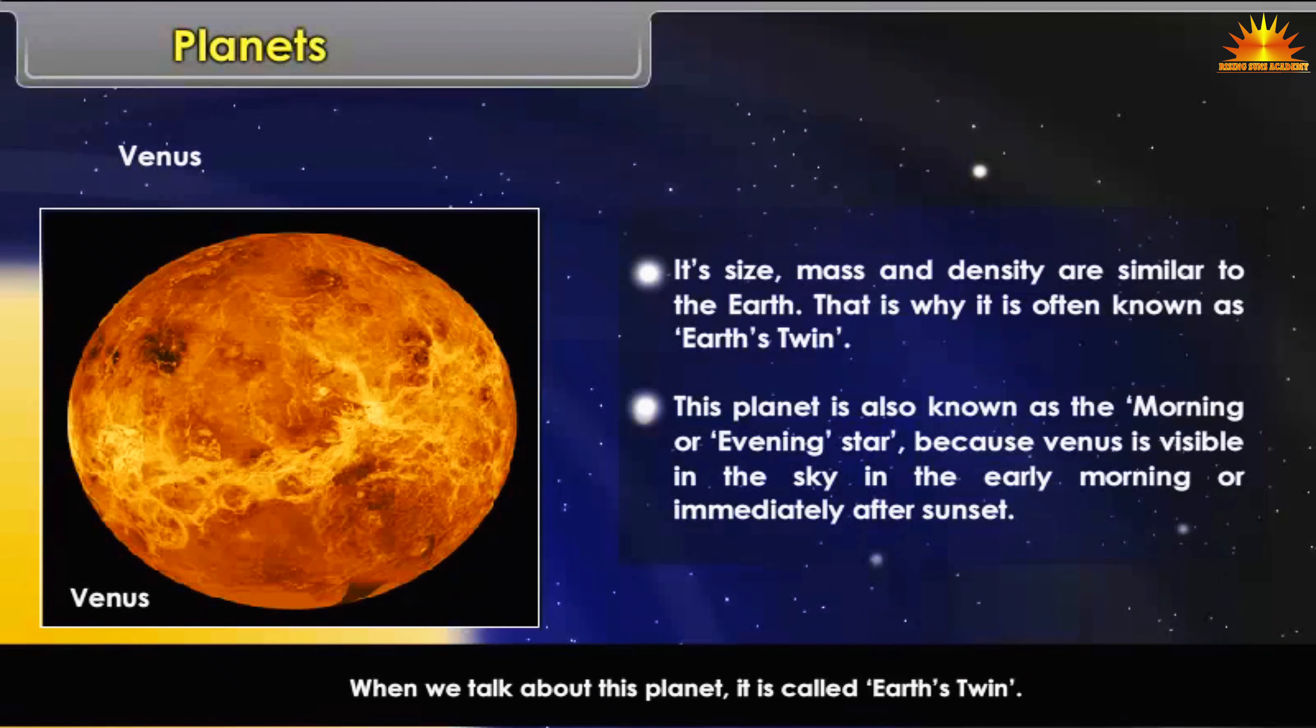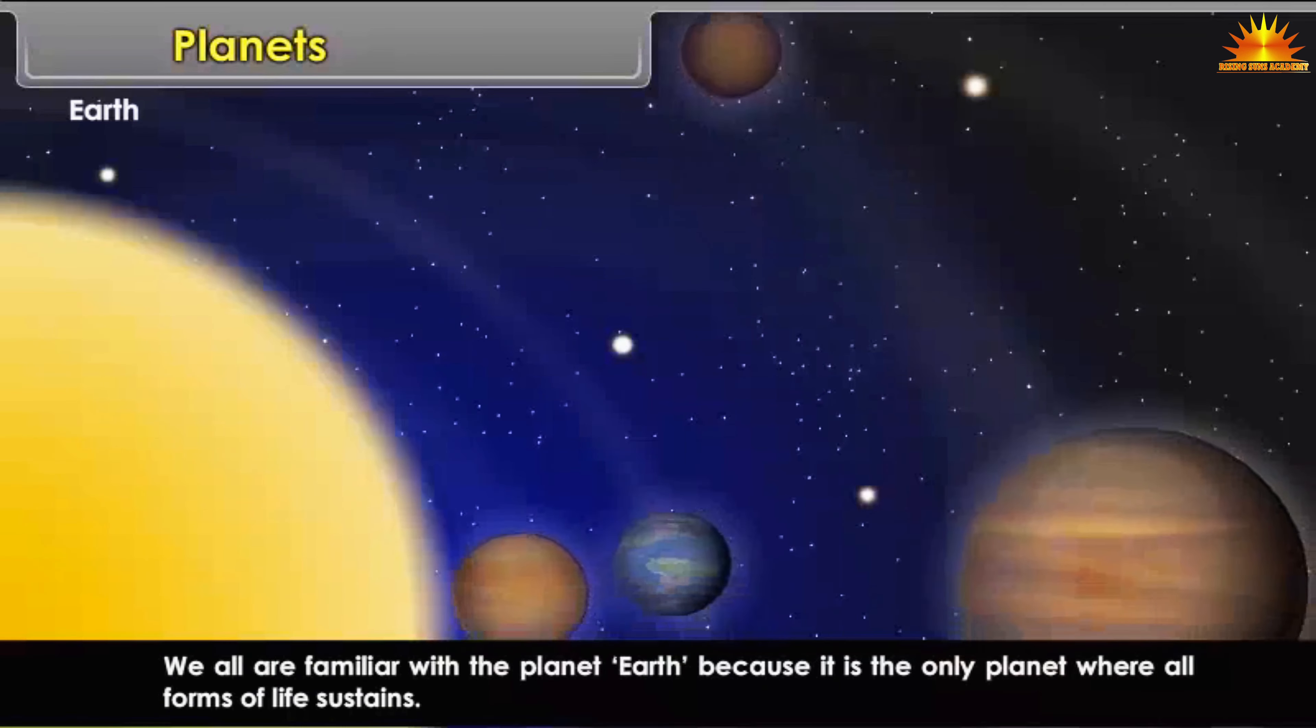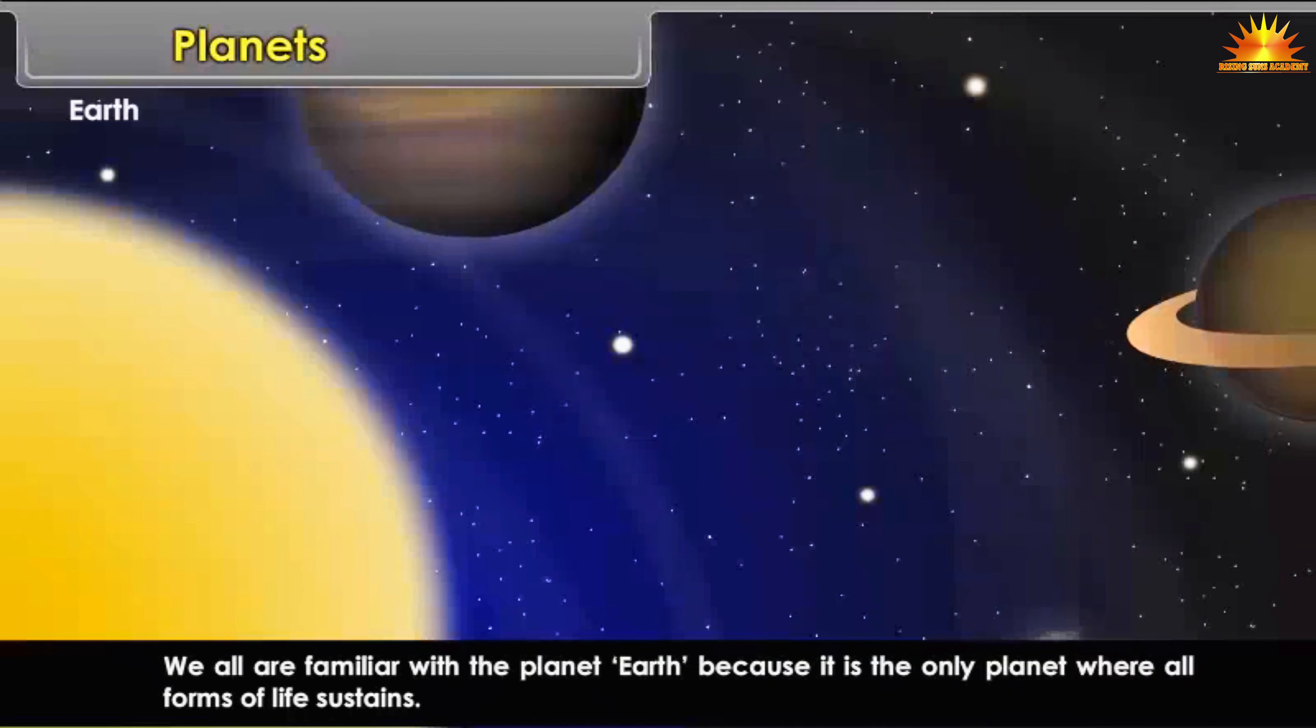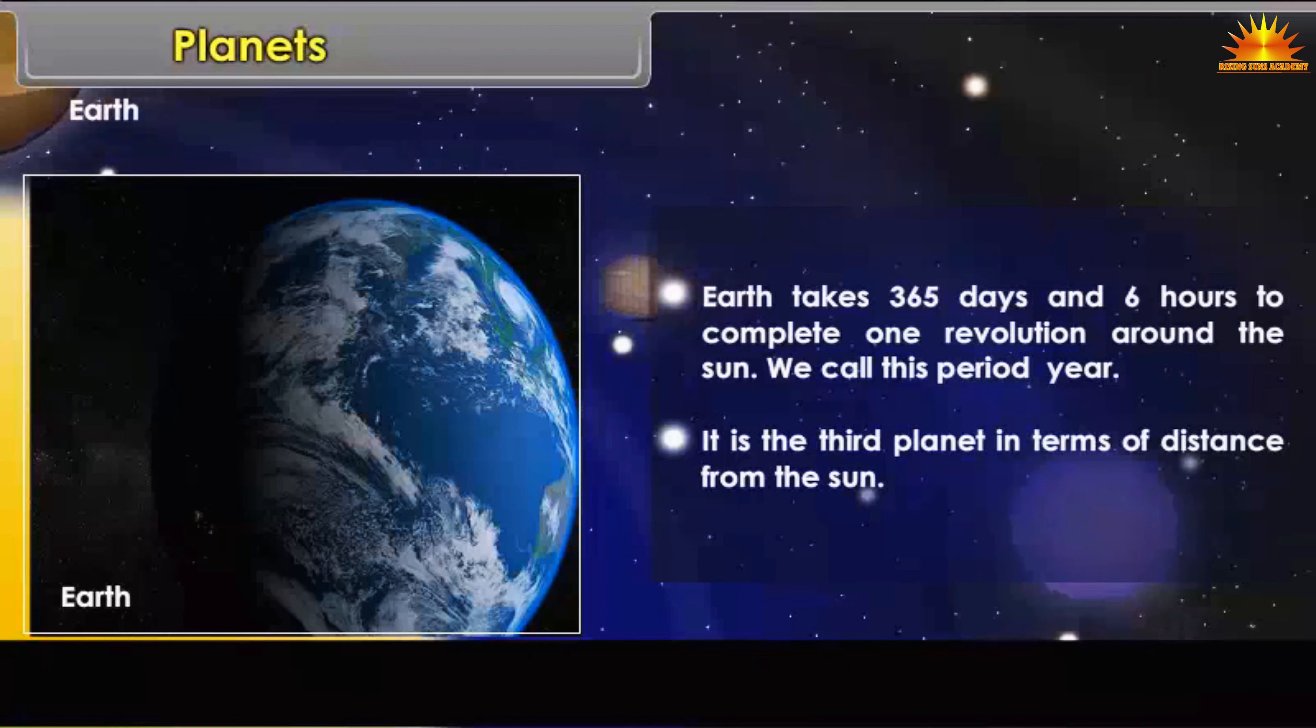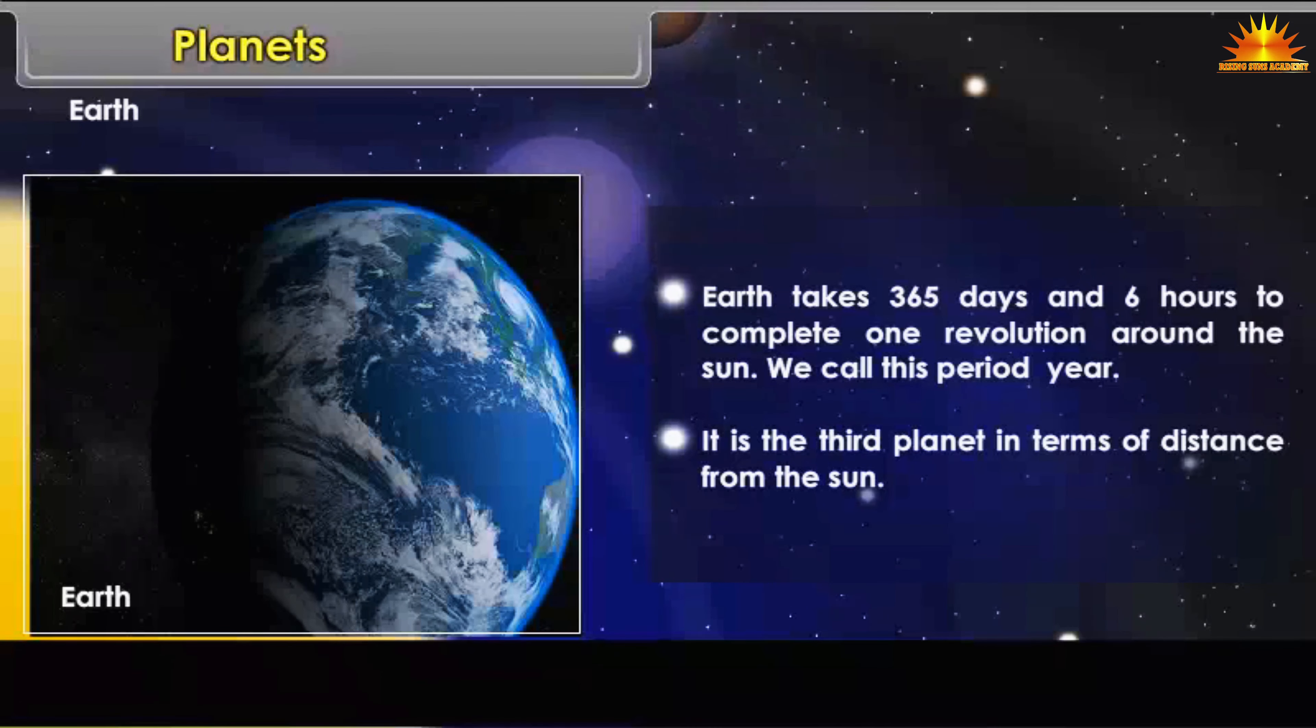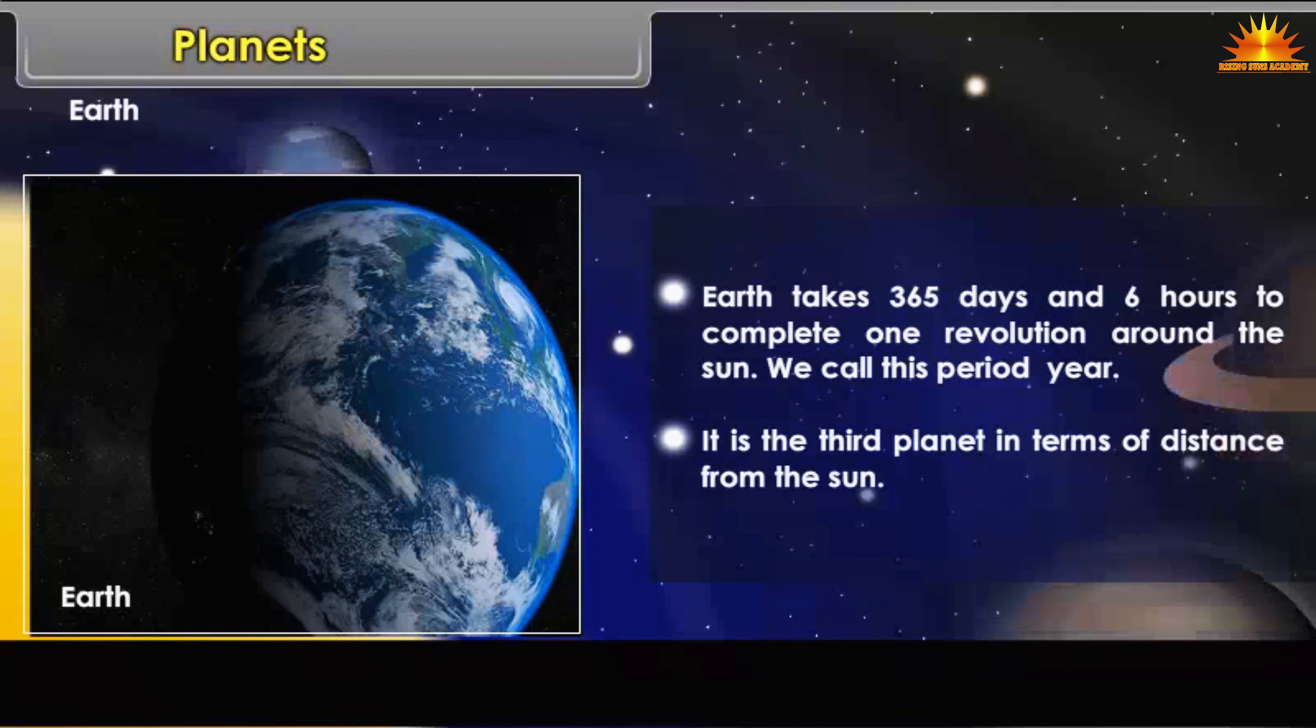Earth: We all are familiar with the planet Earth because it is the only planet where all forms of life sustains. Earth takes 365 days and 6 hours to complete one revolution around the sun. We call this period year. It is the third planet in terms of distance from the sun.